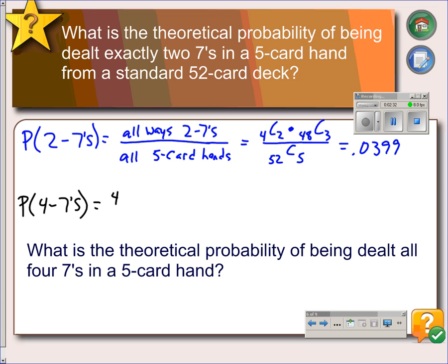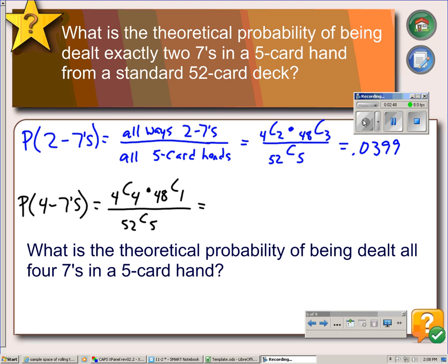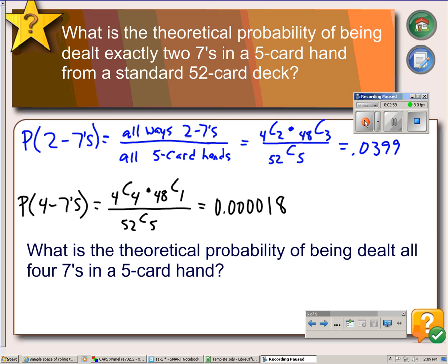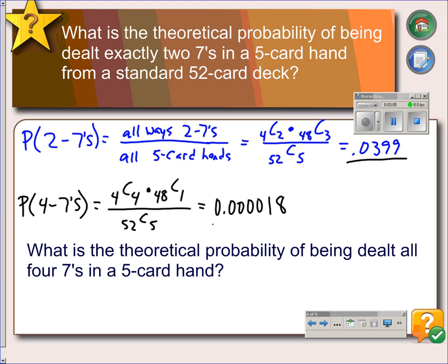Four sevens, we're going to choose all of them, but then we'll still need an additional card. And divide that by all possible five-card hands, and this is how we would set it up. This comes out to 0.000018. So, if you've ever played cards before, you know it's much more likely to get two sevens than it is to get all four sevens.